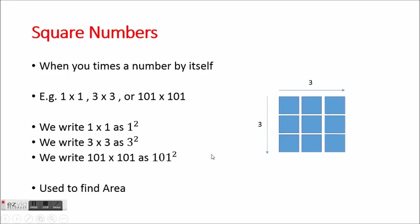So if we were doing this as a question asking you to find the area of a square which is three centimetres long by three centimetres wide, the answer would be nine centimetres squared, because we're talking about area. We always use squared for area.